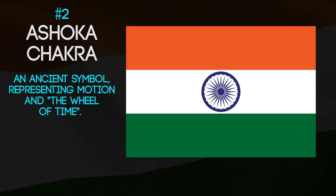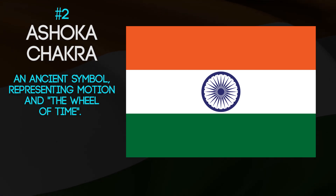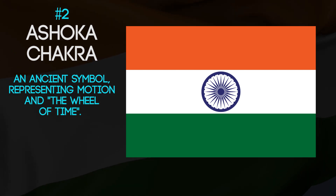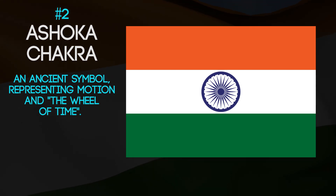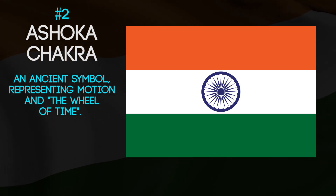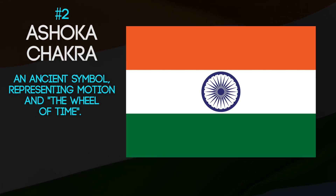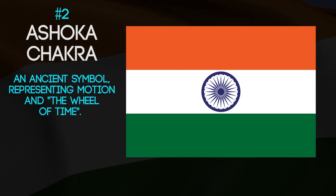This is a 24-spoke wheel, one for each hour in a day, which is also why the symbol is often referred to as the wheel of time. Each spoke also symbolized one of the 24 principles of life, for example self-control, goodness, honesty, loyalty, etc. The most symbolic feature, however, is that the chakra symbolized movement. It intends to show that there is life in movement and death in stagnation. For the Indian country to prosper, it is crucial that it adapts to change.